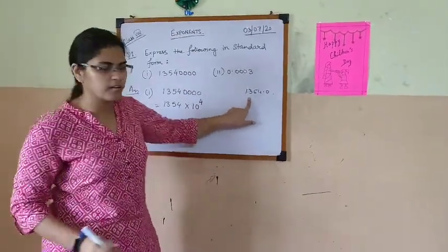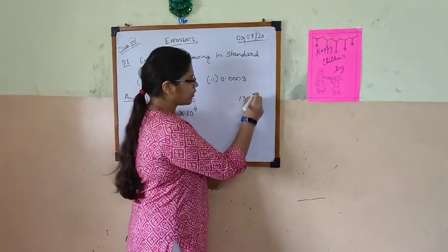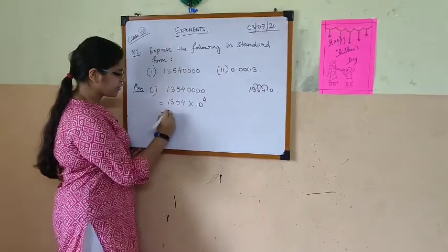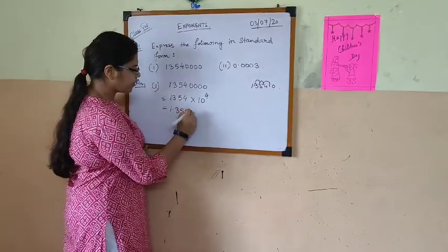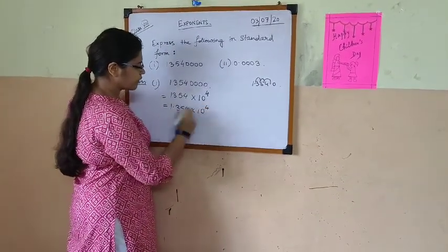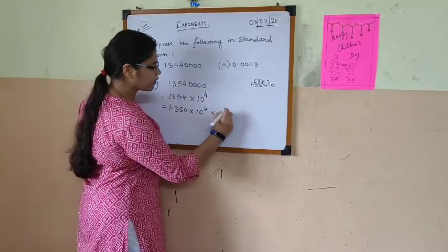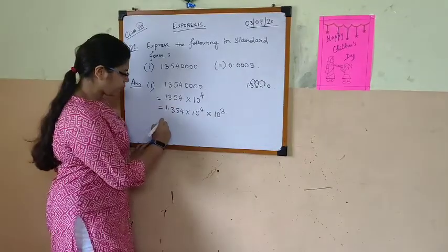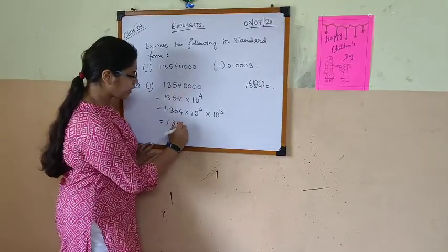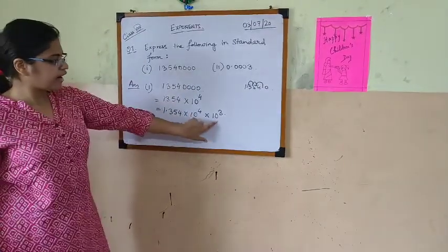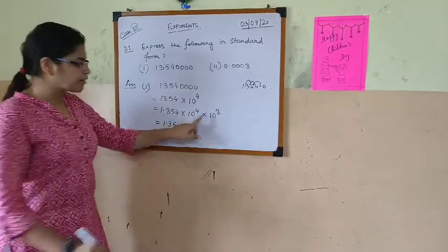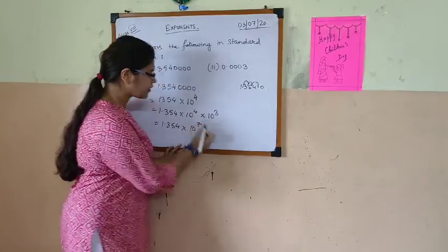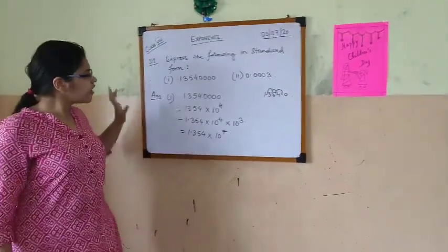After 1 digit we get the decimal point. So how many digits will it shift? 1, 2, 3 digits. So that means 1.354 into 10 to the power 4. So with this we will multiply 10 to the power 3 because it is shifting 3 digits. So here we have to apply the laws of exponents — the 10s have the same base, so the exponents will get added up. So 4 plus 3 is 7. So the answer is 1.354 into 10 to the power 7.